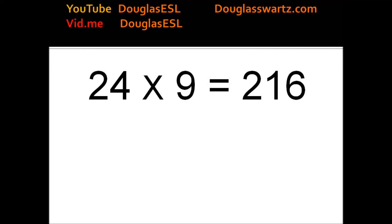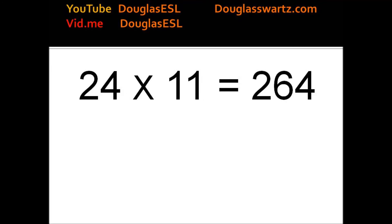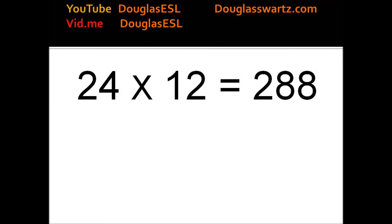24 times 9 equals 216. 24 times 10 equals 240. 24 times 11 equals 264. 24 times 12 equals 288.